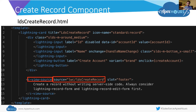I have another component called viewSource, and I'm bringing it into my ldsCreateRecord component. Just like we can pass in parameters to methods in Apex, we can pass in parameters to components. Here I have a variable in viewSource called source, and I'm going to pass the value 'lwc/ldsCreateRecord'. Let's take a look at this viewSource component — remember, we're passing in a value to the source variable.